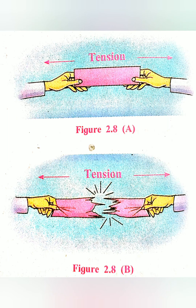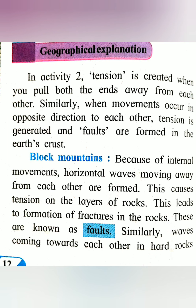We have seen earlier that when compression takes place, faults are formed, and here again faults are formed. Because of compression, mountains are formed, and because of tension, rift valleys or block mountains are formed. Because of internal movement, horizontal waves moving away from each other cause tension on the layers of rock, leading to fracturing. These fractures are known as faults. Waves coming towards each other in hard rocks also form faults due to compression.